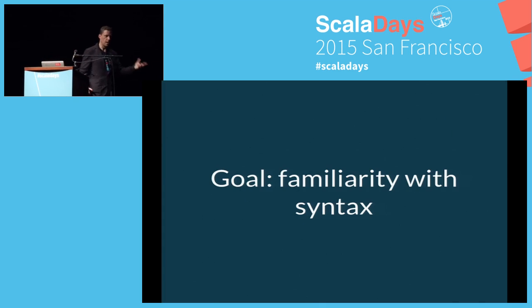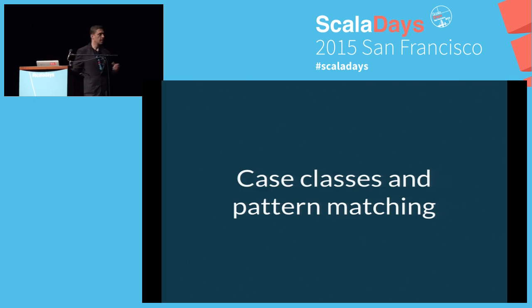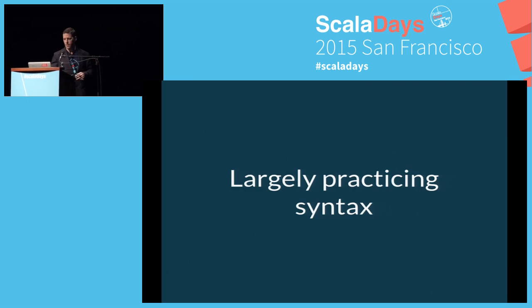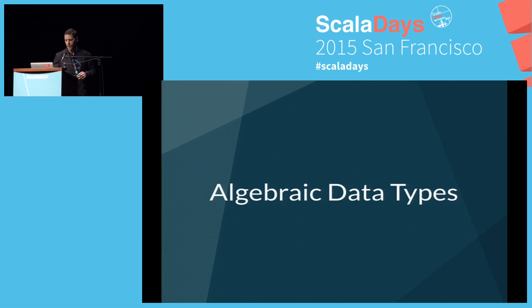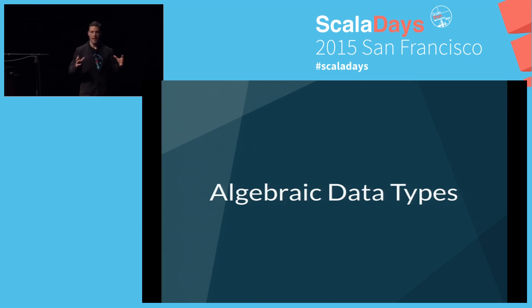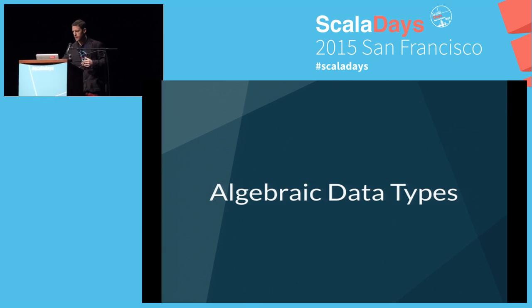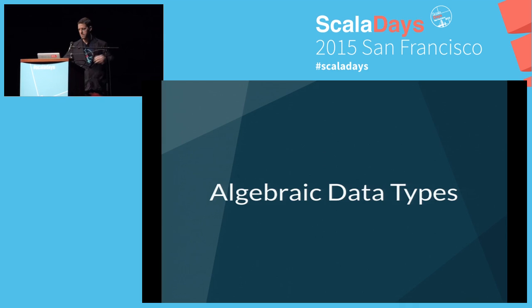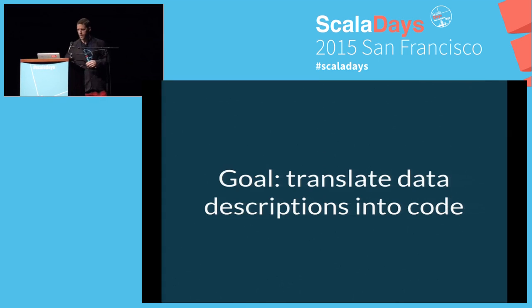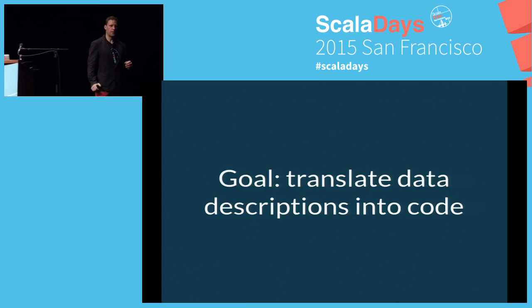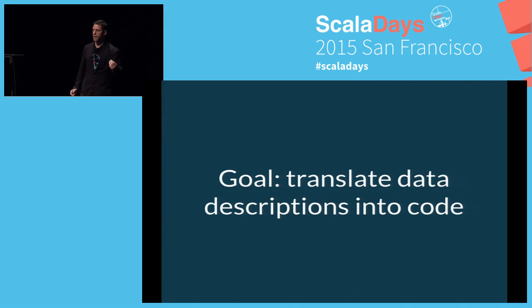At the beginning of our course, we're teaching basic language features, syntax, and objects and classes. Most people are familiar with OO code so you don't have to spend much time there. Case classes and pattern matching are introduced, but it's largely syntax. Okay, let's get on to the good stuff: Algebraic Data Types. This is our first big pattern.